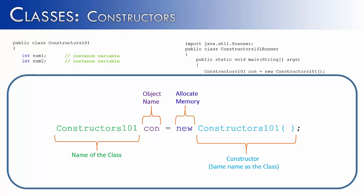When you construct an object it has different parts. First is the name of the class, highlighted in green. Second, you have the object name or object reference — its name is con. Then new, which allocates memory. And then we get to the constructor, which we've kind of glossed over up to this point. When an object is created, the constructor is called — you can't have an object without the constructor, because the purpose of a constructor is to get that object ready for use.